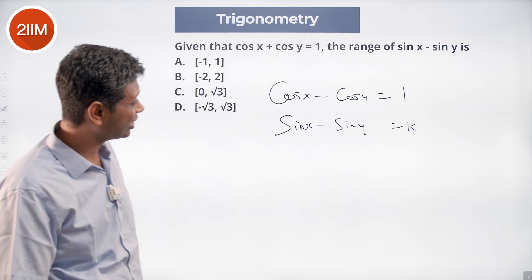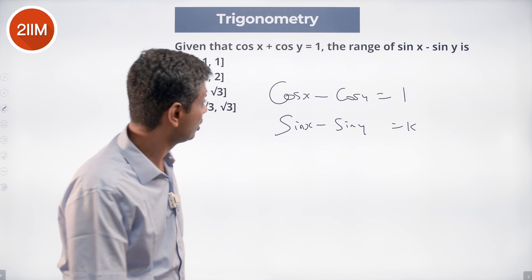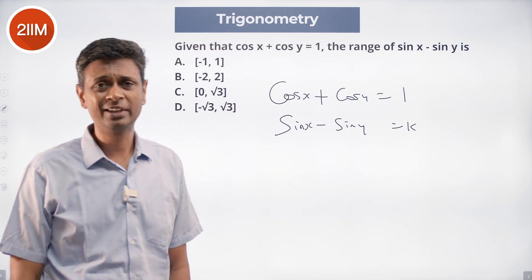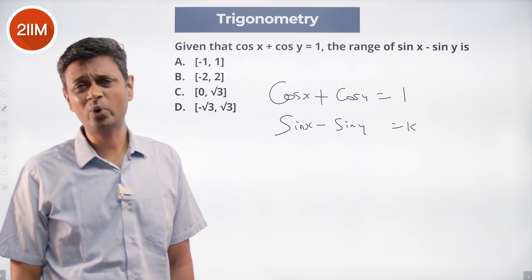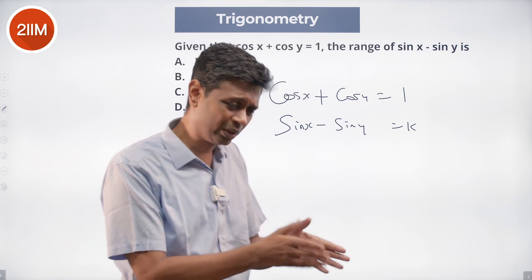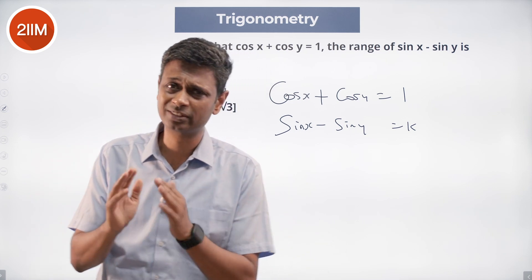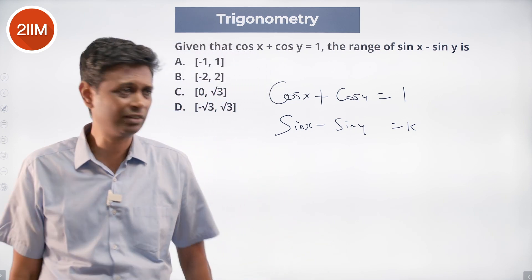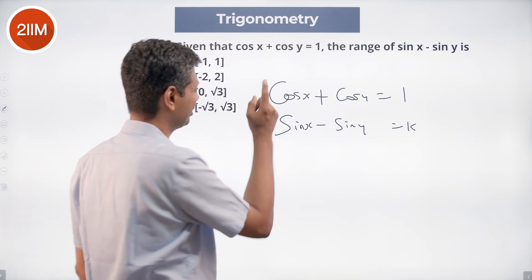I have cos x, I have cos y — cos x plus cos y. I have sin x, I have sin y. What do I do? I square. Why do I square? Because I love cos squared x plus sin squared x — that totally simplifies life. So we square this.